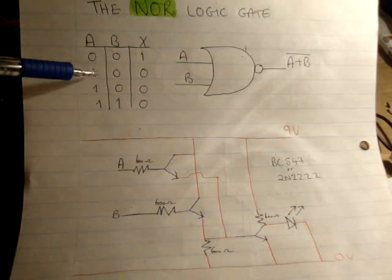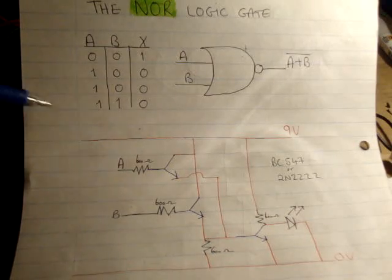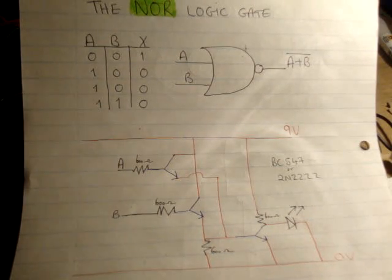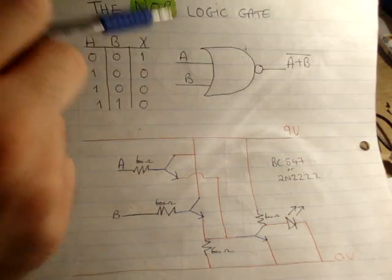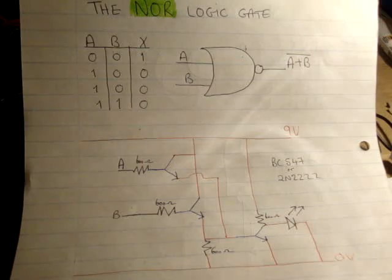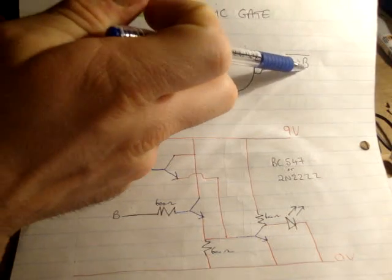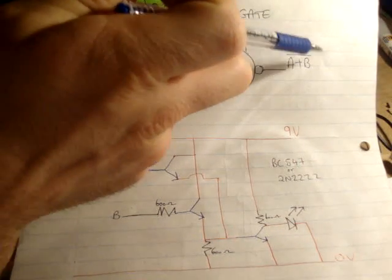When A or B are high, you get a low, or when A and B are high, you get a low. This is the circuit symbol for a NOR gate, so you have two inputs A and B, and an output A or B, NOT, so it's A NOR B.